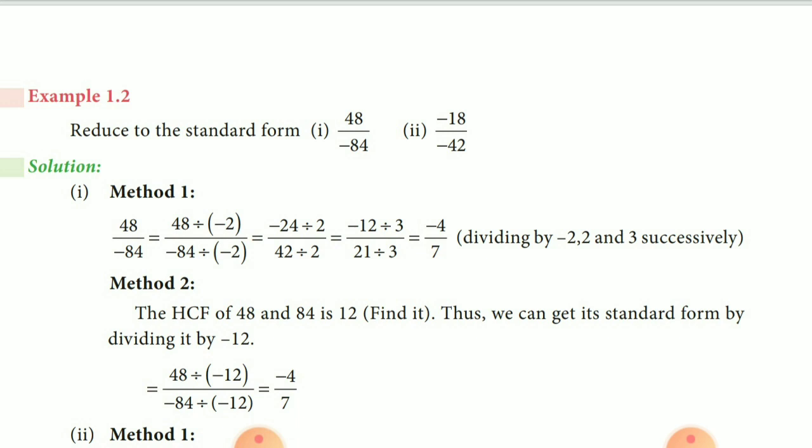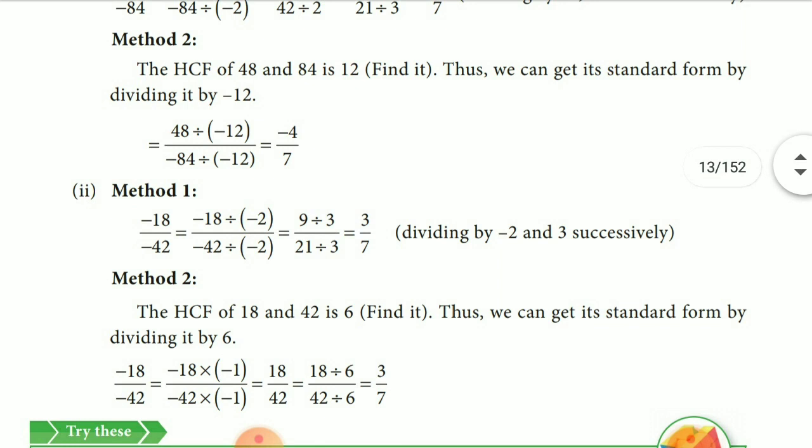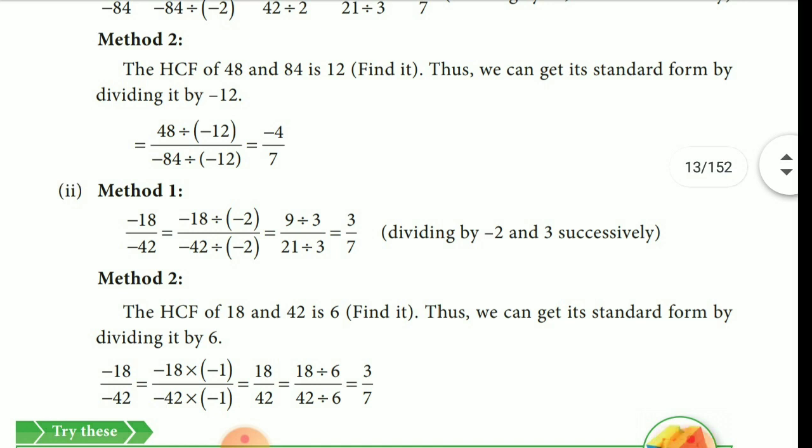Another method: Find the HCF of 48 and 84, that is 12. So, divide both numerator and denominator by 12. We got minus 4 by 7. So, for converting the given rational number into its simplified form, there are two methods. One is doing division and another is finding HCF and simplifying.